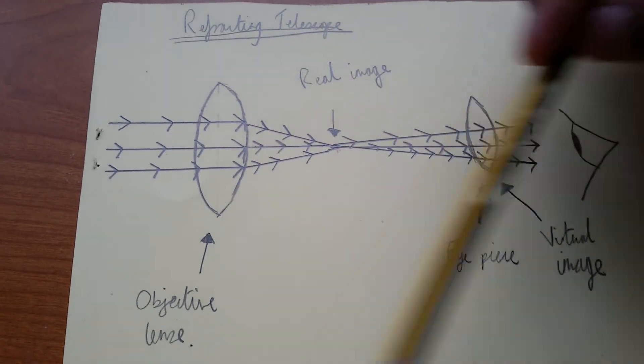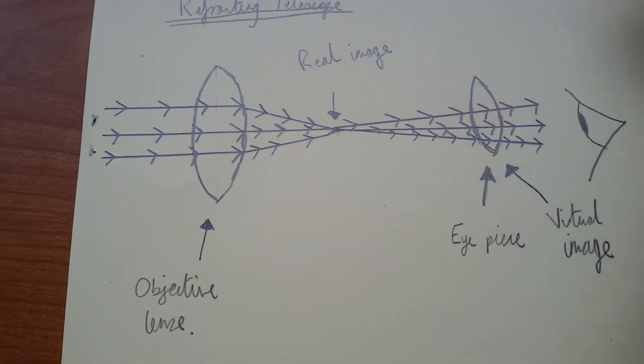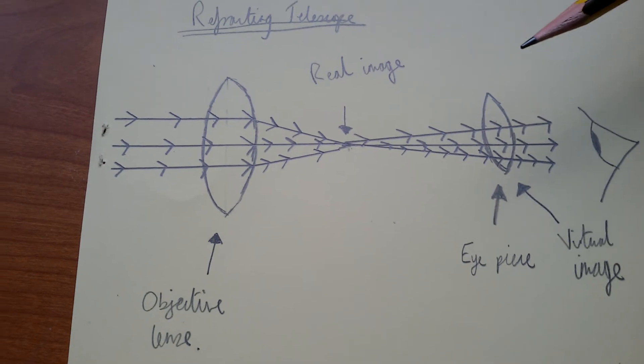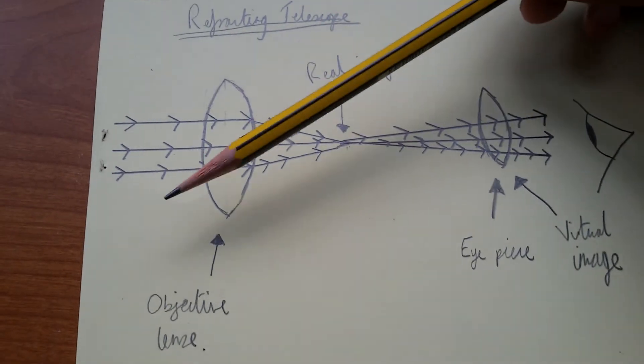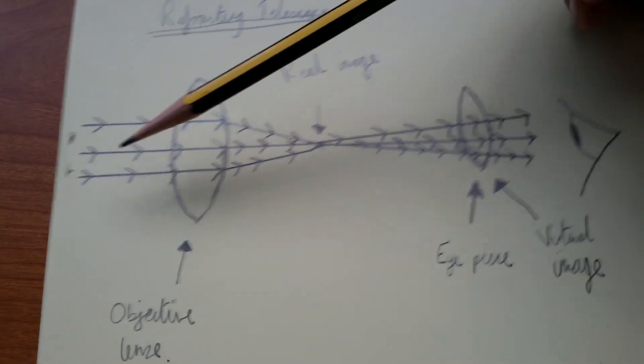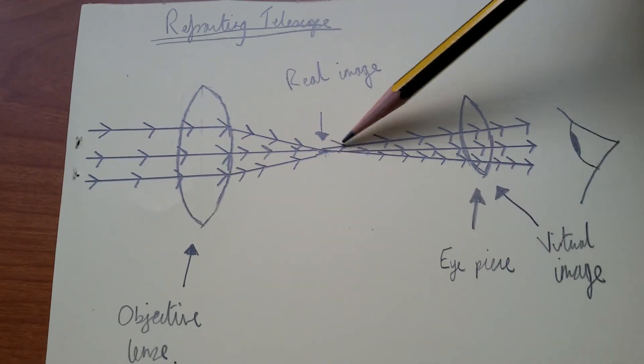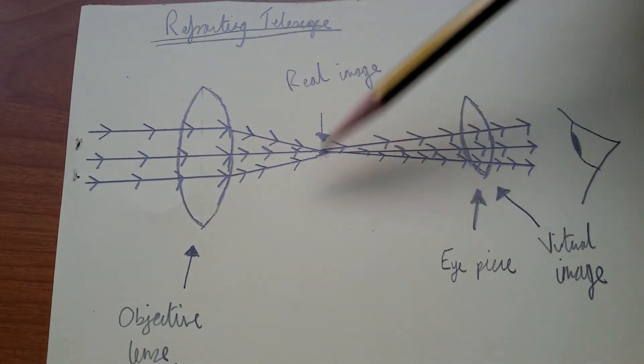So this is basically how a refracting telescope works. So I'll go through it again. The light rays are coming in, as you can see from the arrows and meeting at this point. And a real image is being formed here.